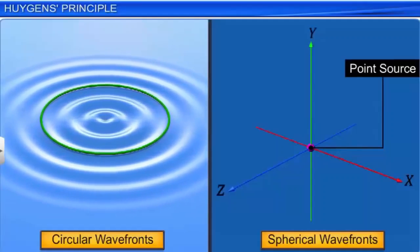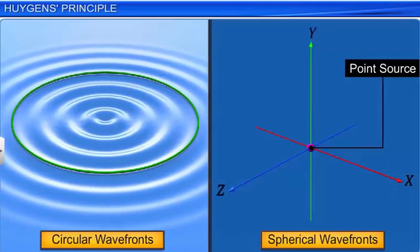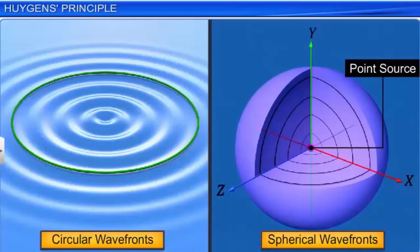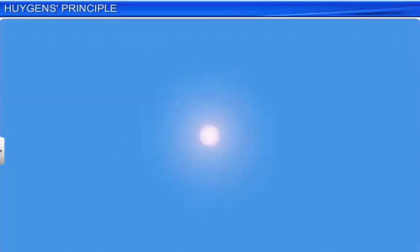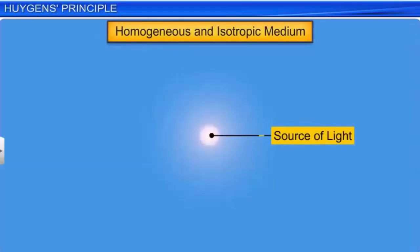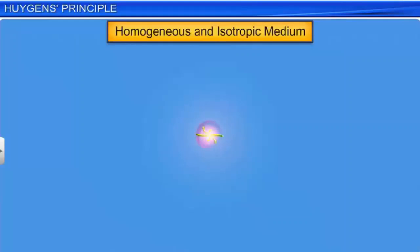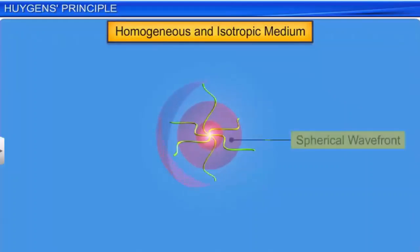Waves on the surface of water are two-dimensional, and hence the wave fronts are circular in shape. But the waves from a source of sound or a source of light in a homogeneous medium spread in all directions and are three-dimensional in nature. Now consider a point source of light placed in a homogeneous and isotropic medium, emitting light waves in different directions. If the medium is homogeneous, the speed of light waves is the same throughout the medium, and if it is isotropic, it is the same in all directions. The loci of all points which have the same amplitude and vibrate in the same phase form a sphere with its center at the source of light. Hence, a spherical wave front is generated when a point light source is placed in a homogeneous medium.